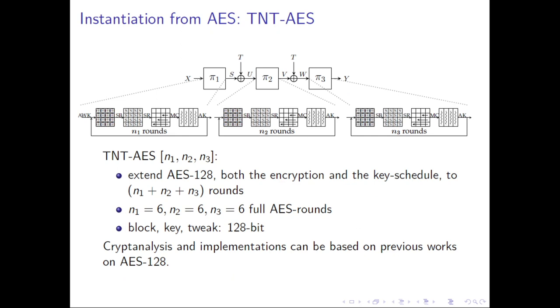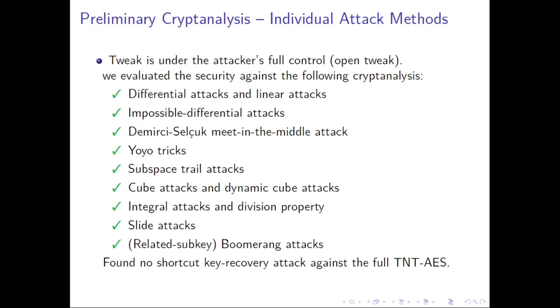We finally propose our instance. You may think the situation as we first extend AES-128 from the original 10 rounds to 18 rounds, and then divide it into 3 chunks of equal number of rounds, 6-6-6 AES rounds. And then we add the tweaks between the 3 chunks. So by this, cryptanalysis and implementations can be just based on previous works on AES. We have made some preliminary analysis in the open tweak setting or chosen tweak setting. We consider differential attacks, linear attacks, impossible differential attacks, and so on. And then we found no shortcut key recovery attack against the full TNT-AES.